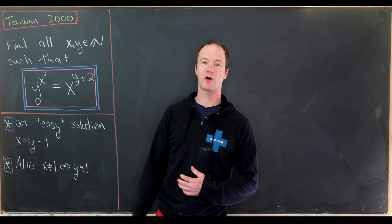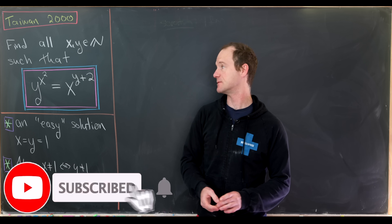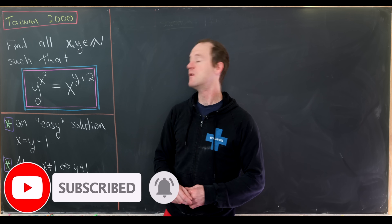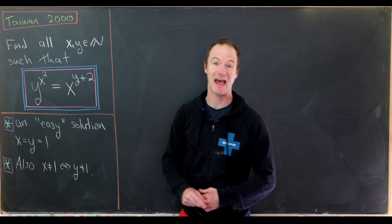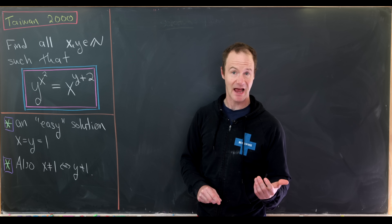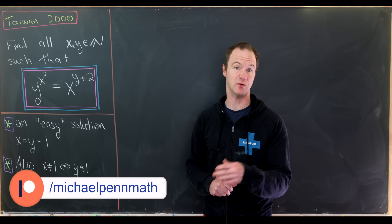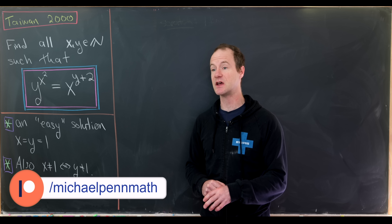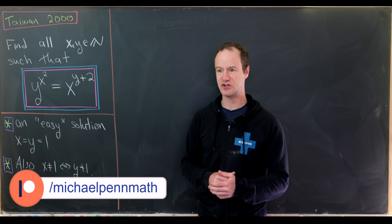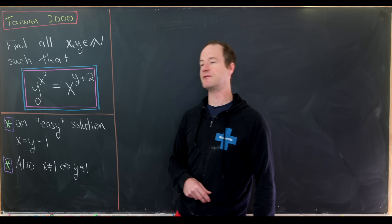Today I've got a nice number theory problem from the 2000 Taiwanese Math Olympiad. There are several pretty cool things about this problem. First of all it's a nice exponential equation, and secondly it won't use anything fancy at all — no modular arithmetic, nothing like Fermat's Little Theorem, just divisibility.